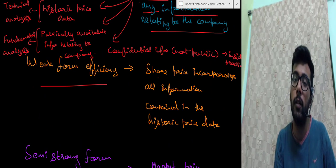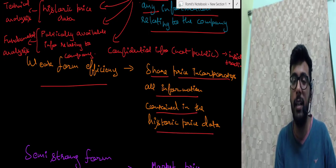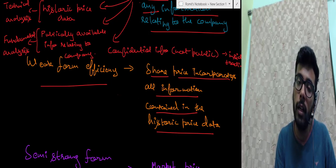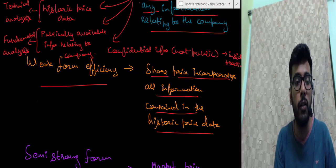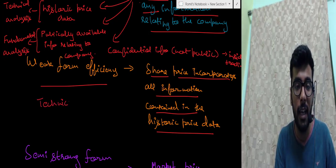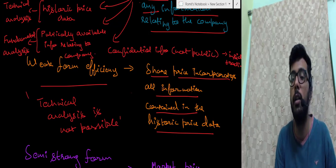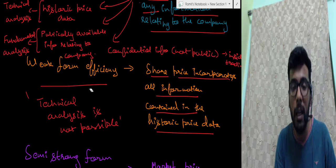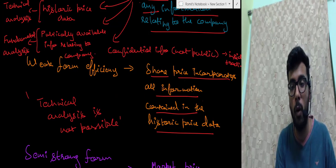Weak form efficiency says that the share price incorporates all the information contained in the historic price data. Whatever trend of the share is going on is already incorporated in the share price, and it is correctly priced according to historic data. This implies that technical analysis is not possible because the share is correctly priced as per its historical data — you cannot look at historical data and say whether the share is overpriced or underpriced.